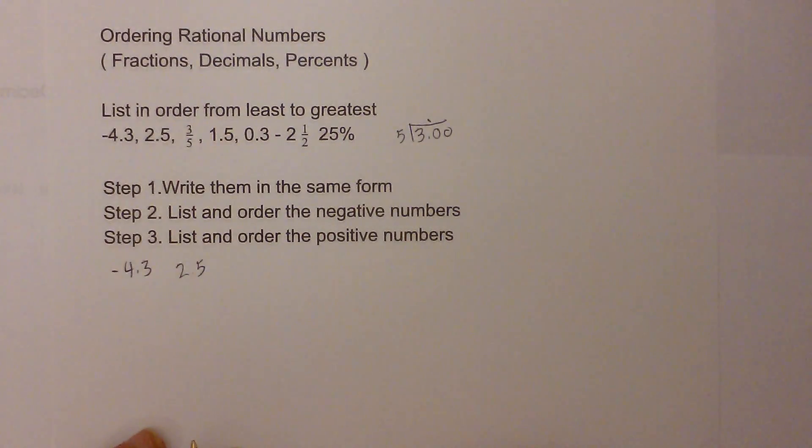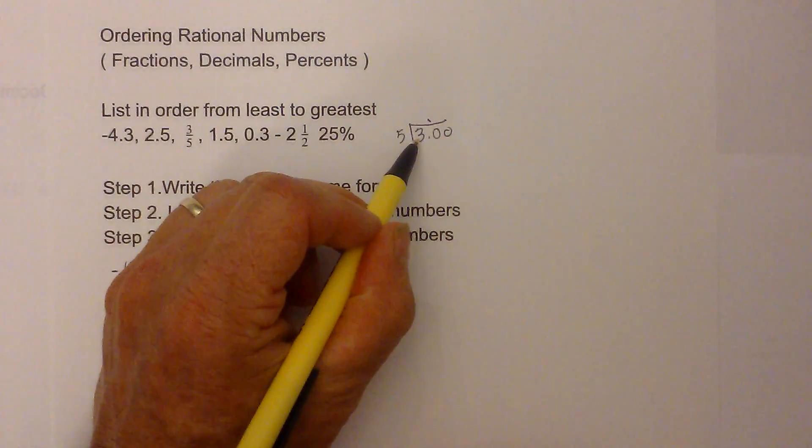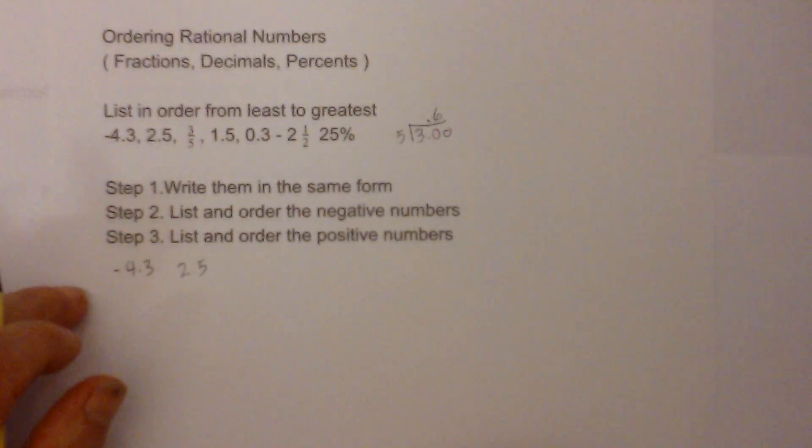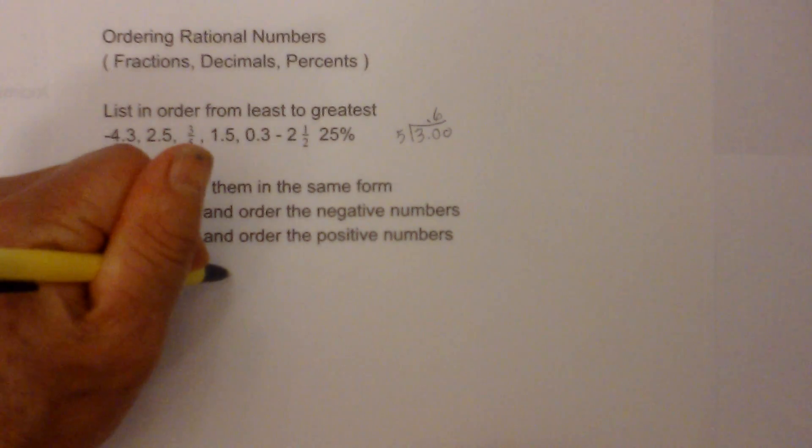I am going to make sure I put the decimal right on top. 5 goes into 3 zero times, but 5 goes into 30 six times, so it becomes 0.6. So 3 fifths is 0.6, so I am going to write 0.6.